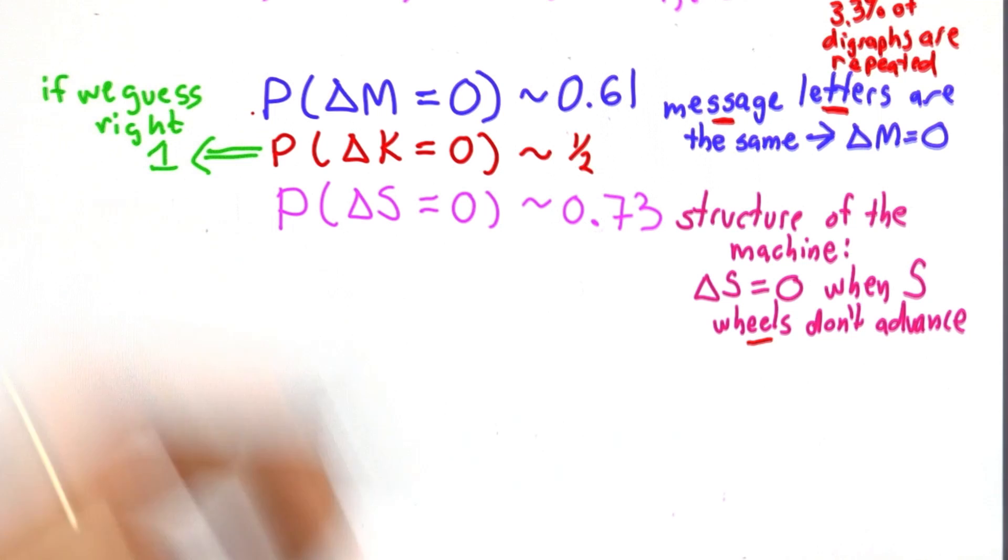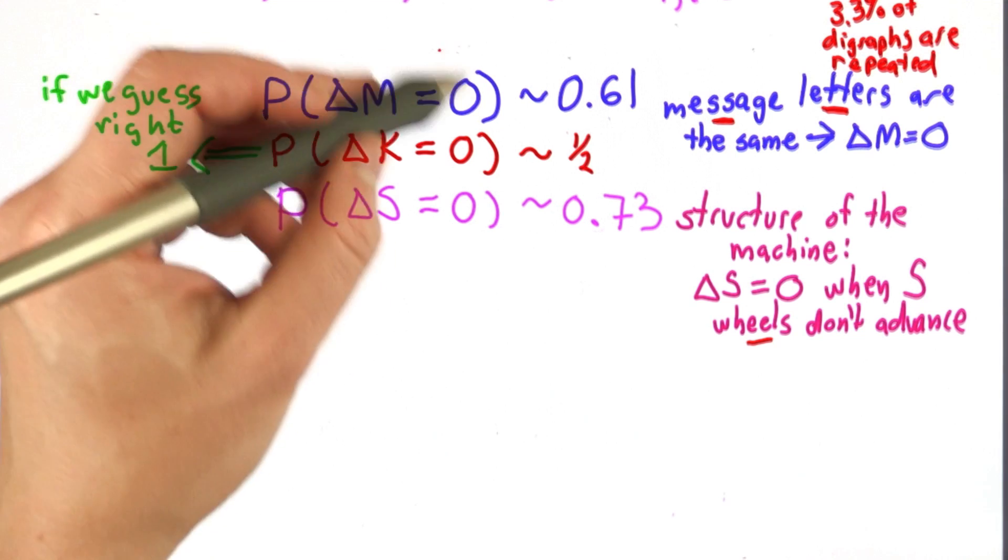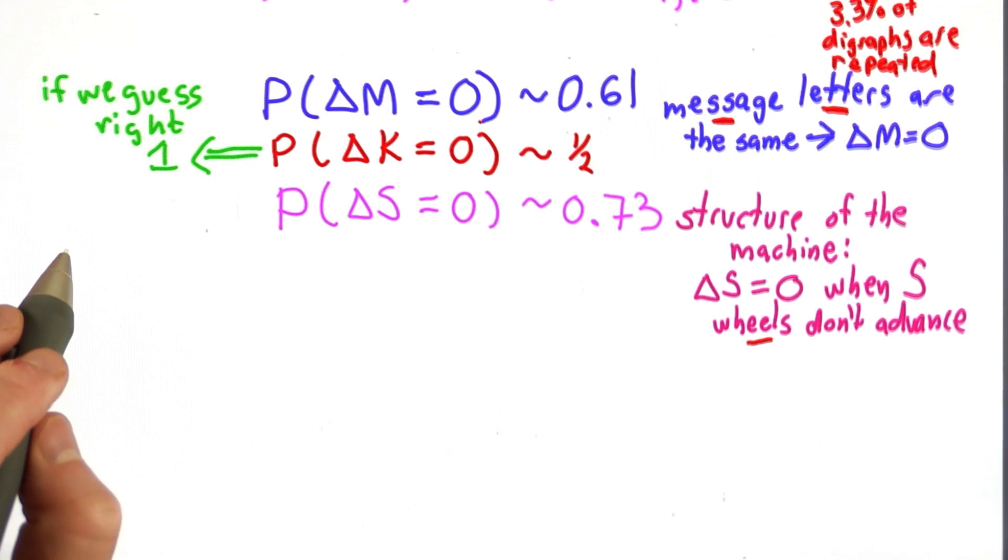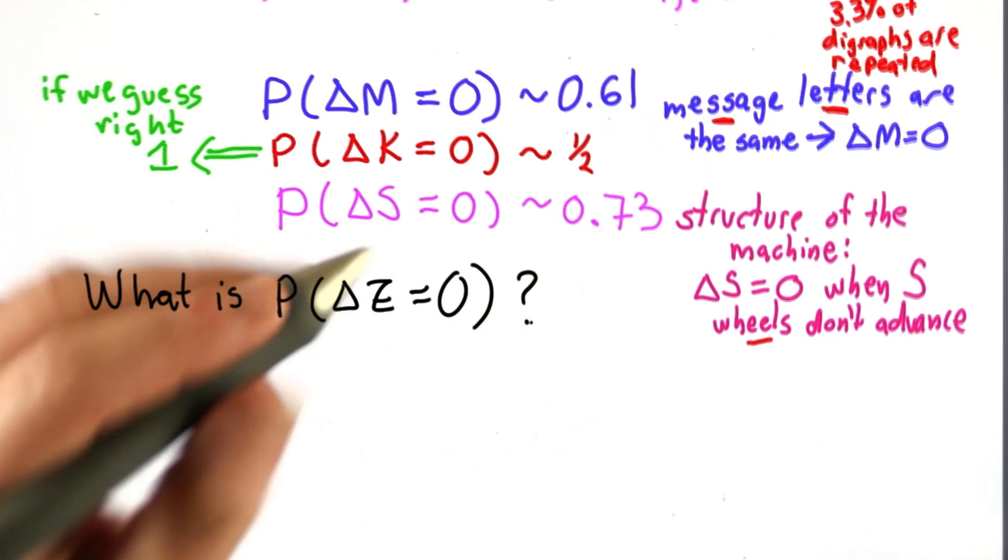So in order to tell if we guess right, we need to know that the probability of the ciphertext bits when we guess right, the probability of delta Z being 0 will be different from 1 half. So the question is, what is the probability delta Z is 0 when we guess right?